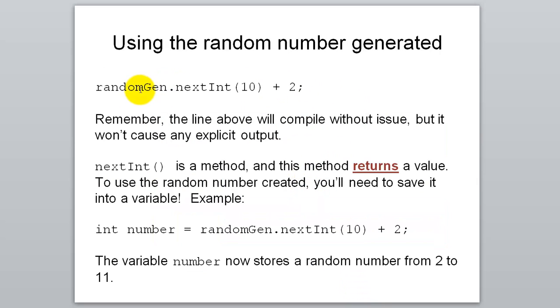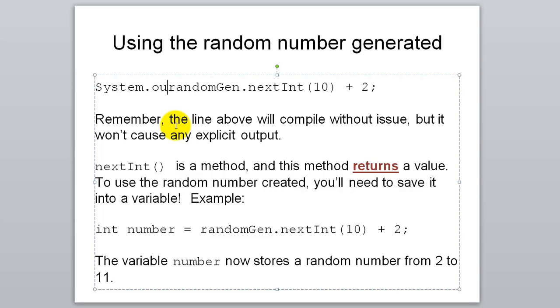Alright, so it's worth noting that whenever you call something like this, randomGen.nextInt 10 plus 2, what actually happens is it grabs a random number that gets returned, it adds 2 to it, but then we haven't done anything with that answer. It doesn't even print it to the screen unless we ask it to do that. So we could do something like system.out.print and then print the entire number. Or you could store that number into a variable as is demonstrated here. Whenever you get that return value, you actually need to store it into something if you want to be able to use it later on.